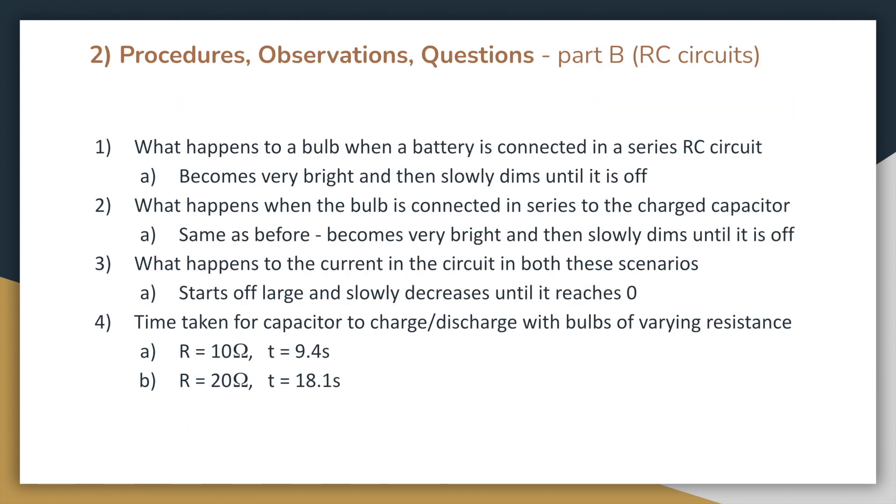As for RC circuits, when a bulb is connected in series with a capacitor and a battery, it starts off bright and then slowly dims until it turns off. The same thing happens if you connect a bulb to just a charged capacitor. It starts off bright and then slowly dims until it's off. And in both these cases, the current starts out large and then slowly decreases to zero, which is why the bulb dies out.